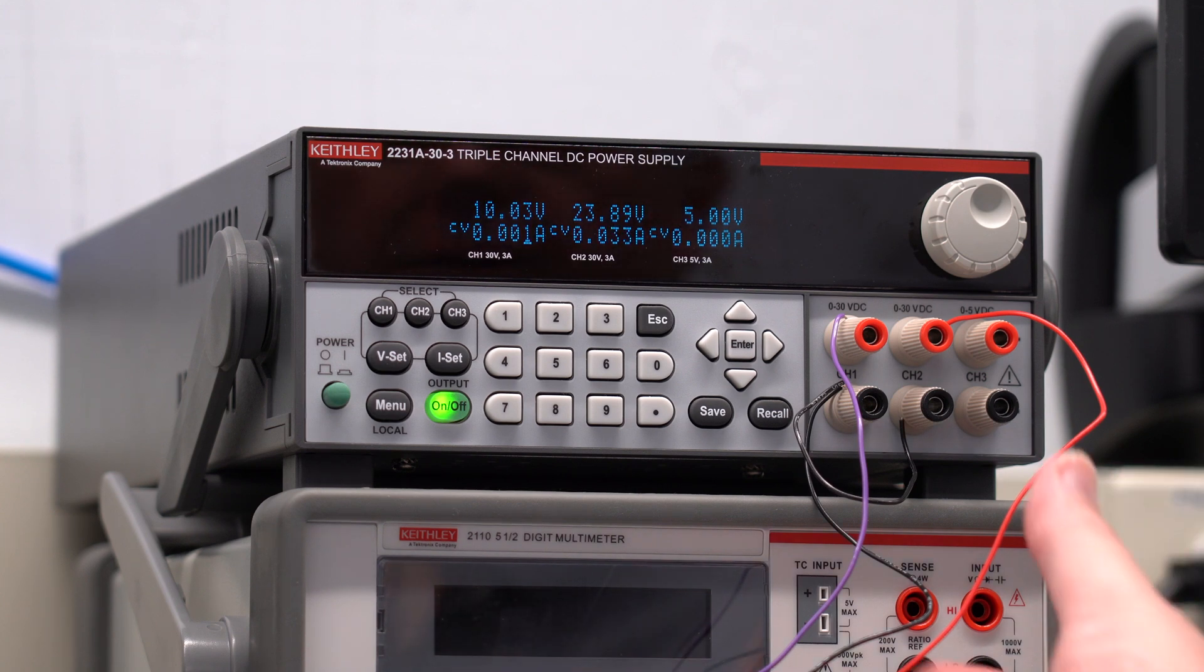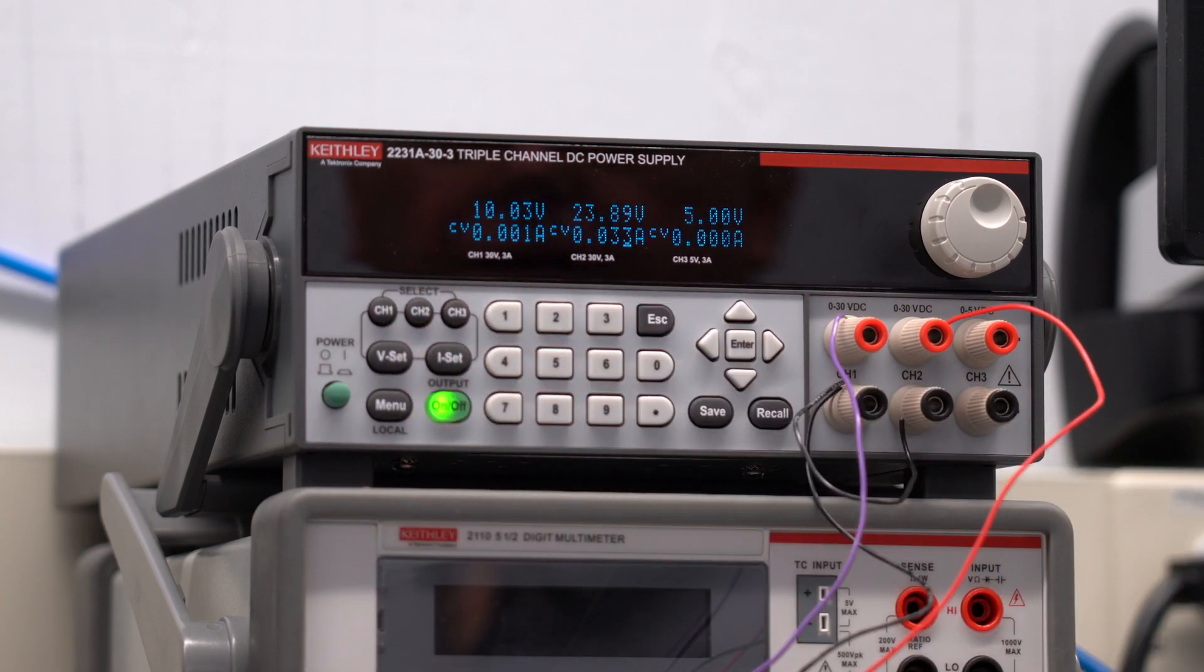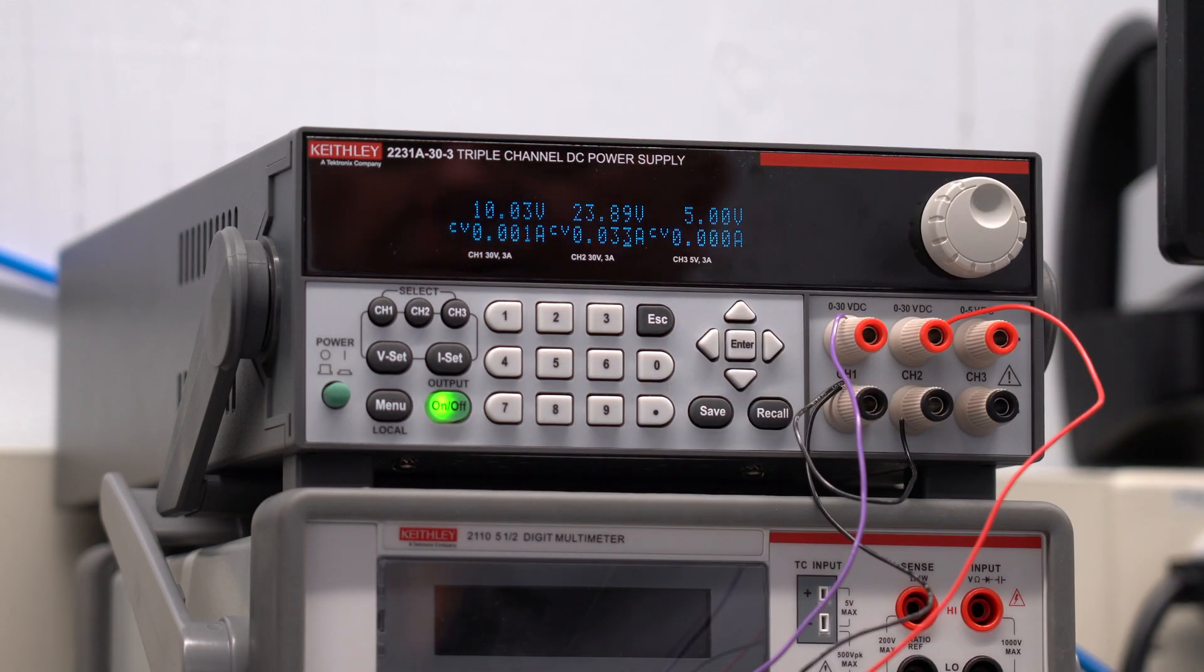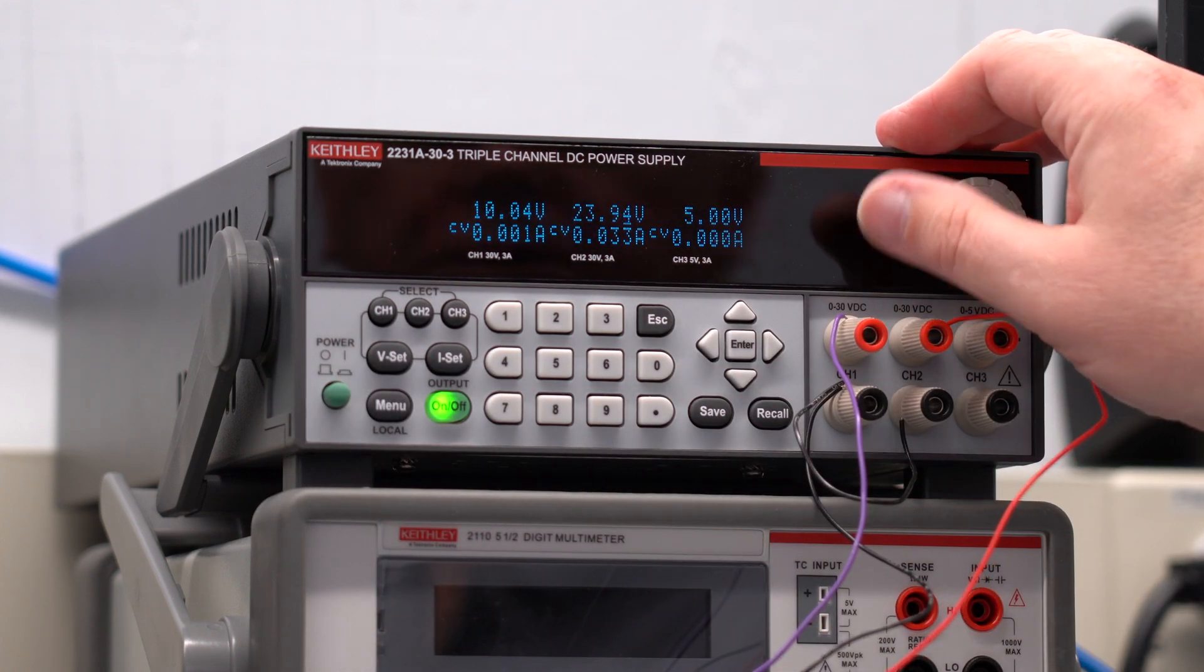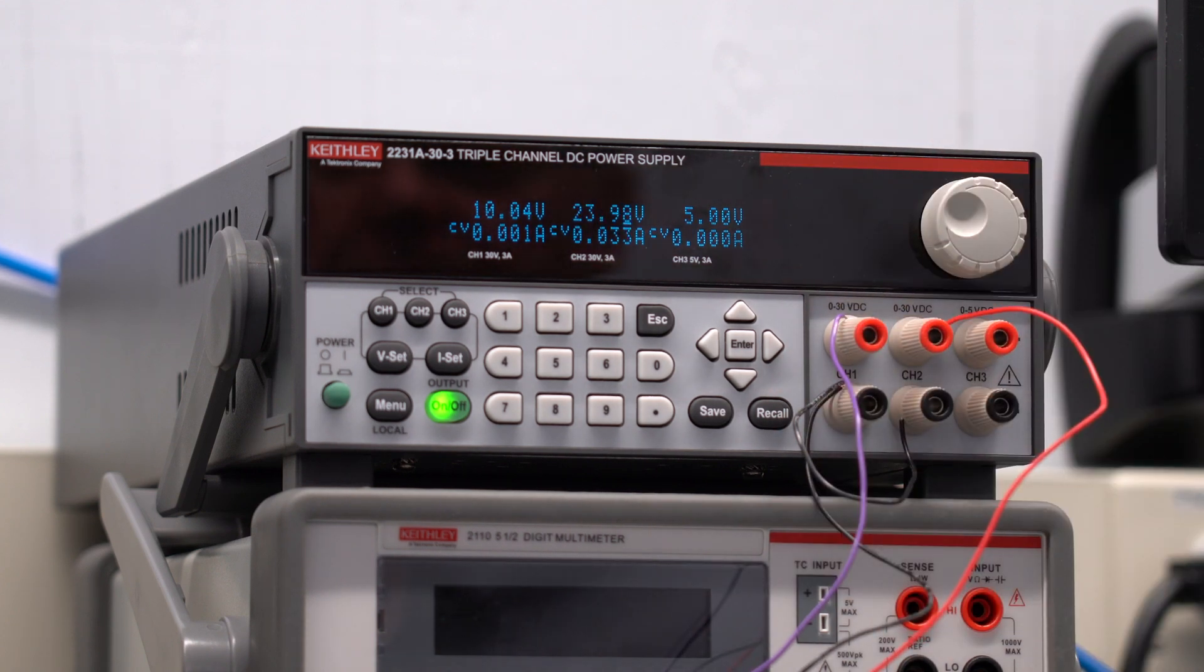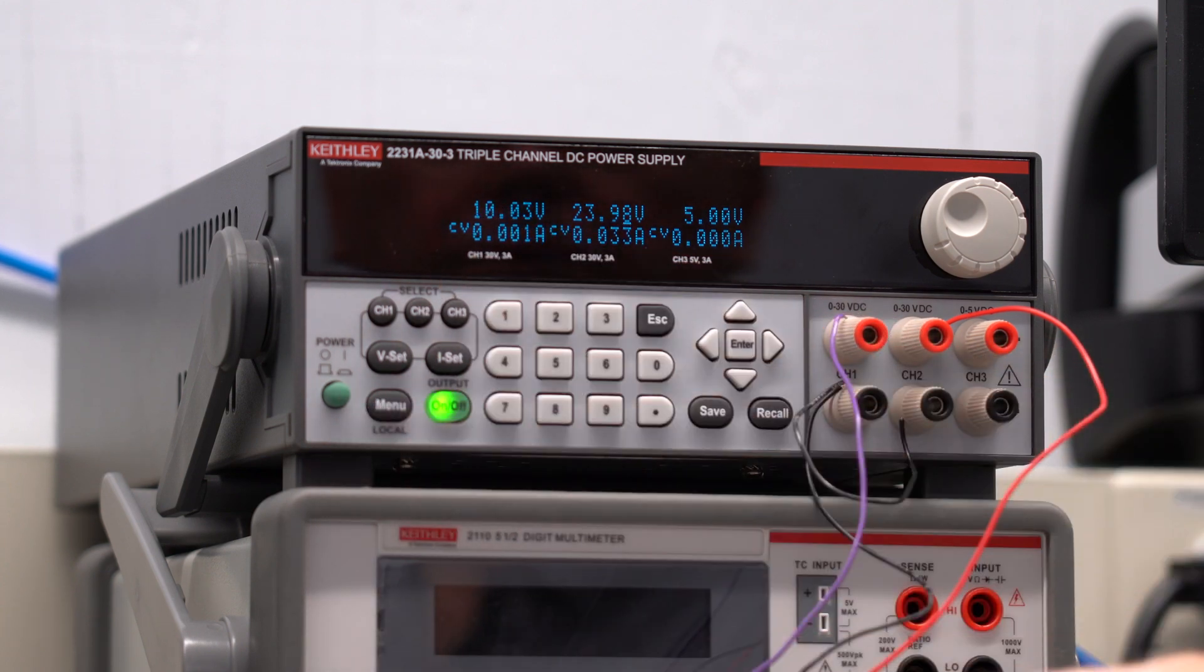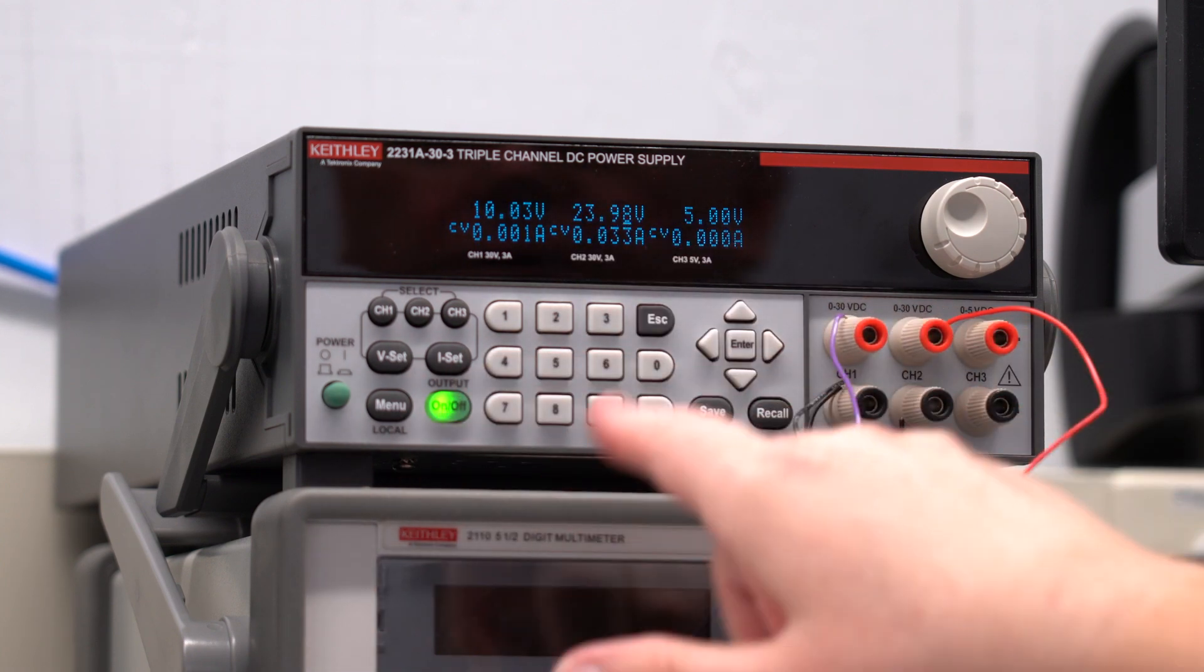Same thing for channel 2. I've set channel 2 for current limiting of 0.4 amps or 400 milliamps. So if we do get over 400 milliamps, the output voltage, this 24 volts, will drop down. And you can see that I've got channel 2 V set for about 24 volts. Let me readjust it a little bit. Okay, and when it's running, when it's not flashing anymore, it's telling me the current down at the bottom. So this is only drawing about 1 milliamp at 10 volts, and this one's drawing 33 milliamps at 24 volts. And you got to make sure that if you want to adjust channel 1, you got to make sure that this is pressed.